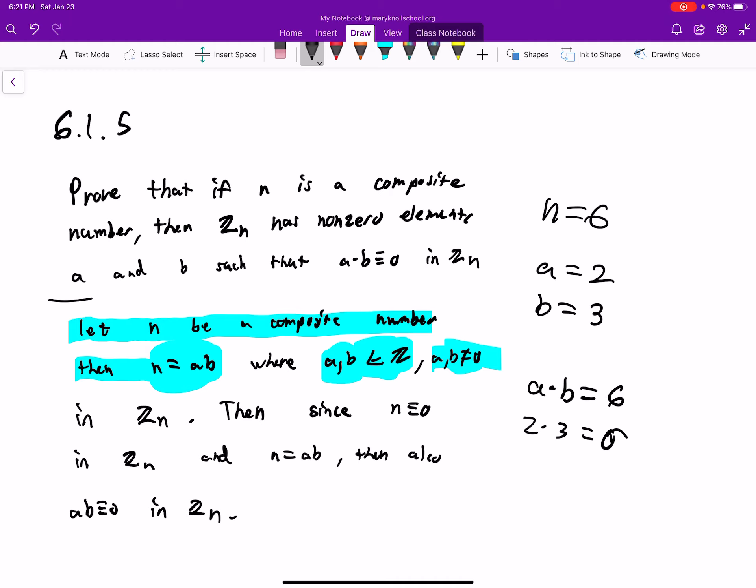Since n is equivalent to zero in Z_n by definition, and n equals ab since n is a composite number, and a and b multiplied by each other equals n.